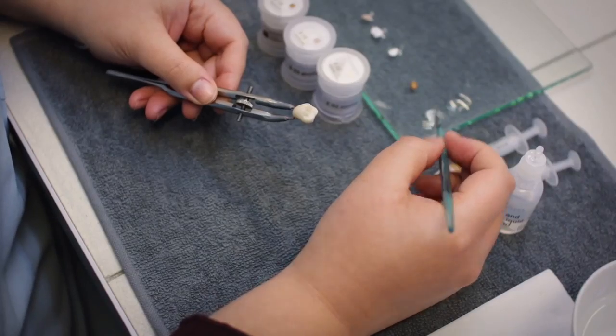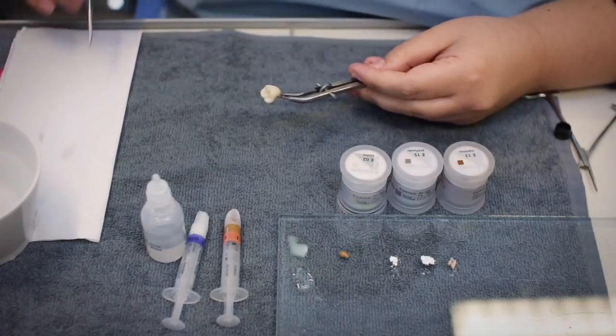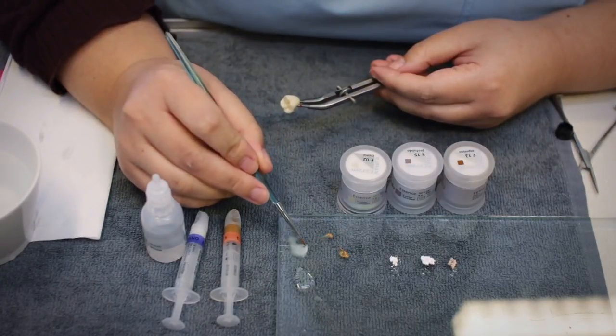Glaze is applied over the entire crown. A darker shade of glaze is used on the cervical third and a light fluorescent glaze on the incisal third.